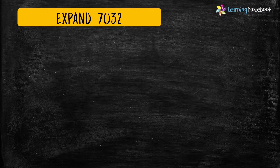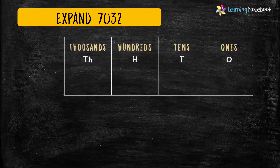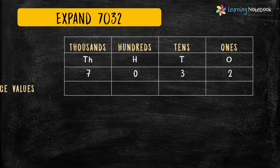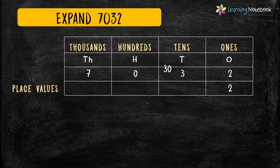Expand 7032. First, let's make the place value chart for this number. We will write 2 at 1's place, 3 at 10's place, 0 at 100's place, and 7 at 1000's place. Now let's write the place values. The place value of 2 is 2. The place value of 3 is 30. The place value of 0 is 0.